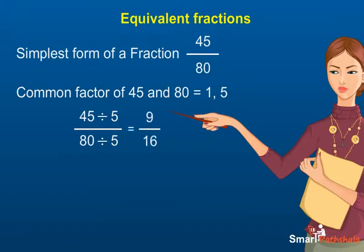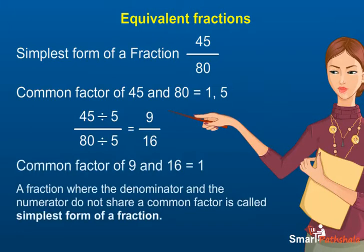We get the fraction as 9 upon 16. Now, the numerator and denominator have no common factor except 1. Such a fraction is called the simplest form of the fraction.